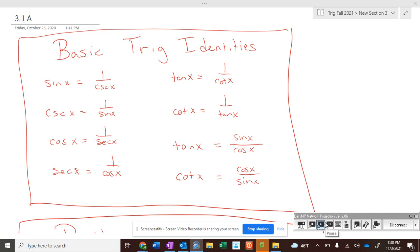So on your note card, you want to write all this down under a section called basic trig identities. You need the following identities: sine of x is the reciprocal of cosecant, or 1 over cosecant of x. The cosecant of x is the reciprocal of sine of x. The cosine of x is the reciprocal of secant. Secant is reciprocal of cosine. Tangent is reciprocal of cotangent. Cotangent is reciprocal of tangent.